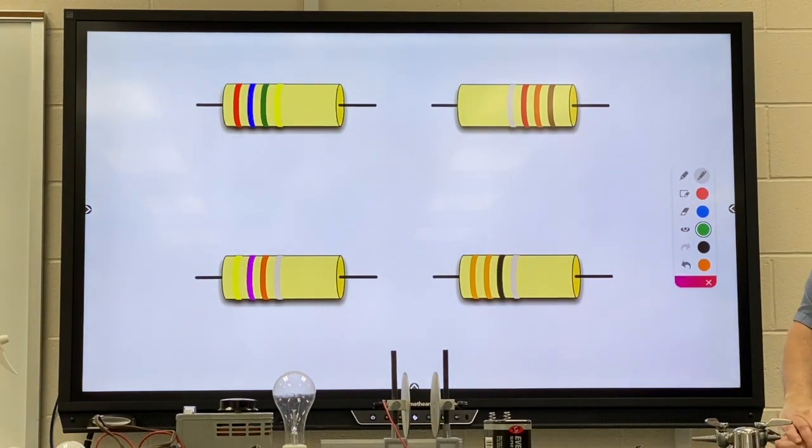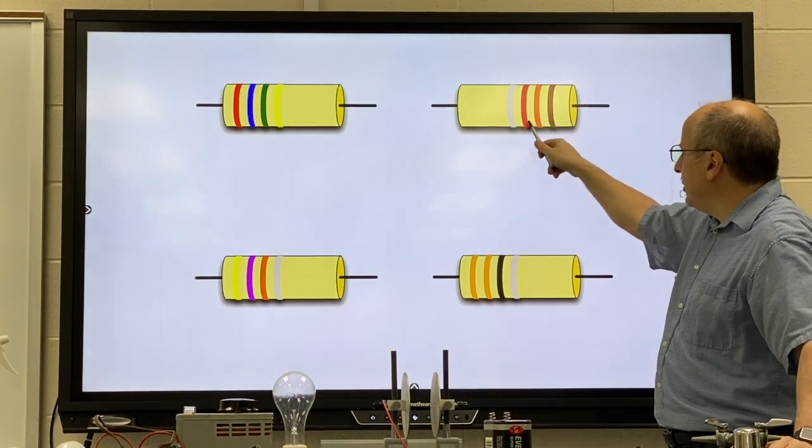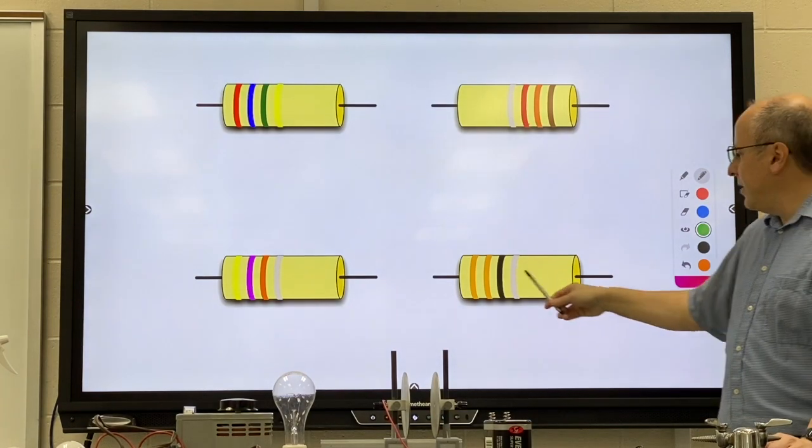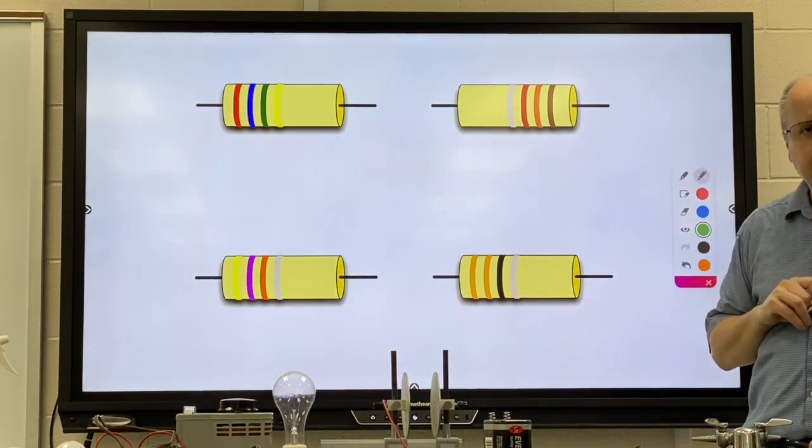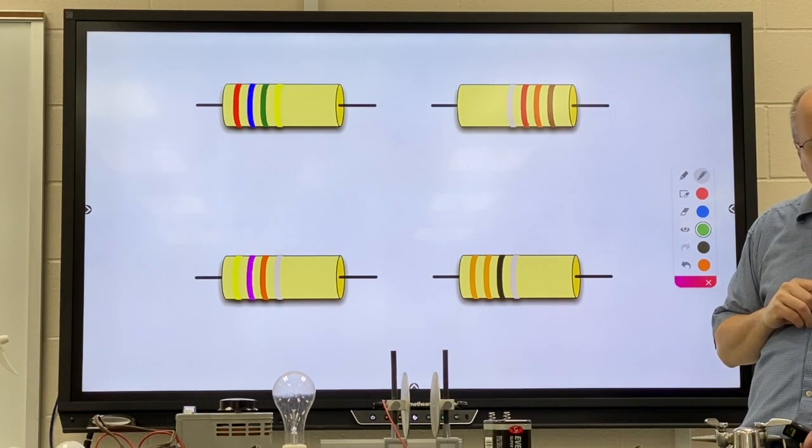Here are four that you should try and do on your own. If you can't see the colors it's red, blue, green. And then it's yellow, purple, orange. And then this one is backwards so it's black, orange, red. And then orange, orange, black. So pause the video and see if you can get the right answers.